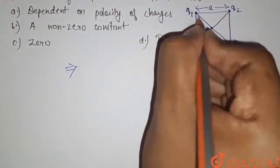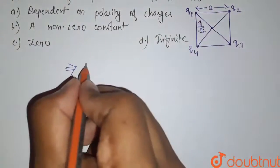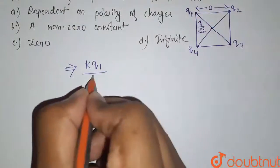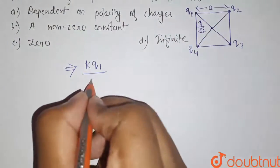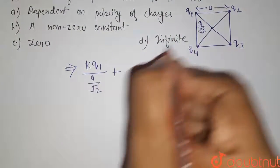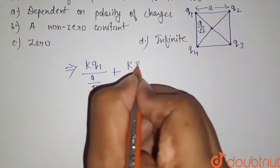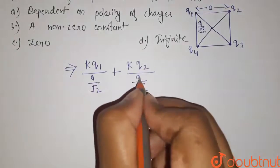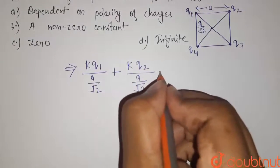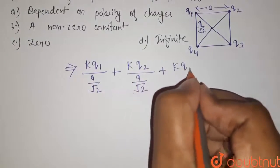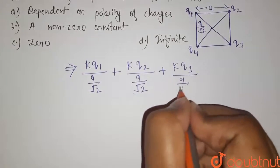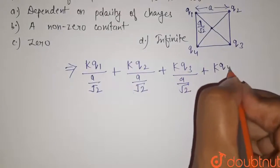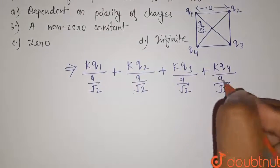Now, the potential at center due to first charge is given by kq1 divided by the distance. The distance here is a by root 2 plus due to second charge, it is kq2 divided by a by root 2. Plus due to third it is kq3 divided by a by root 2 plus due to fourth it is this.